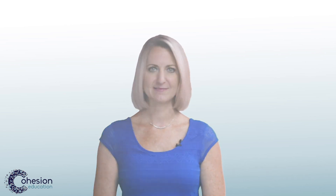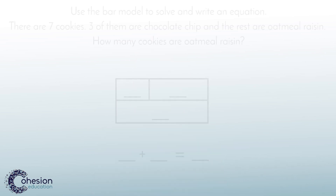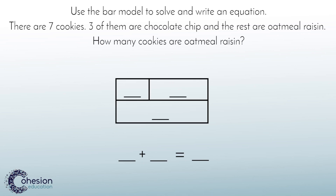Now let's take a look at an example where students will use a bar model to add with a missing addend. Students may see a problem like this where they are given the total or whole and only one of the parts or addends.